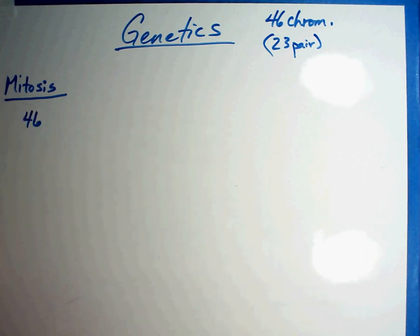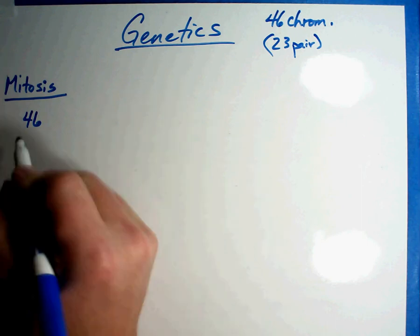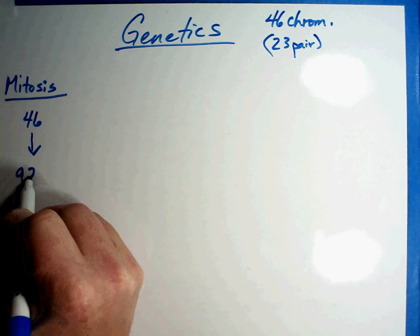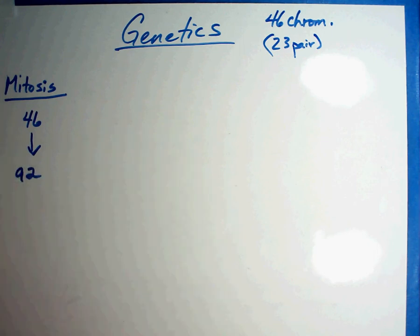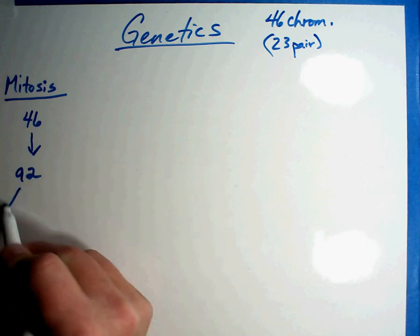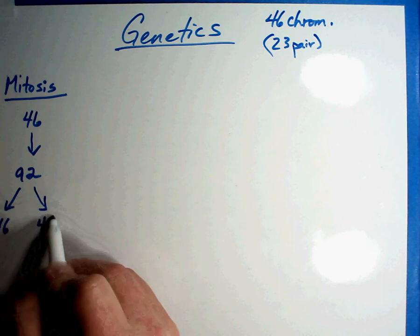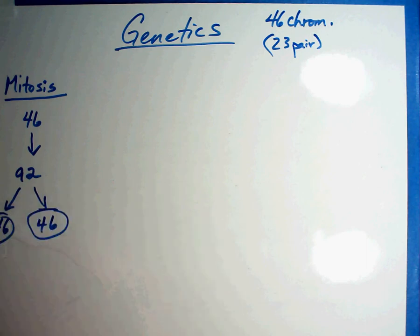You have a normal cell in your body that has 46 chromosomes. The first thing you're going to do is you're going to double your DNA, which is not normal, but you're going to double your DNA. And in a couple of minutes, we're going to split it in half. What happens is you end up with two cells that have 46 chromosomes, just like the original cell. This is mitosis.